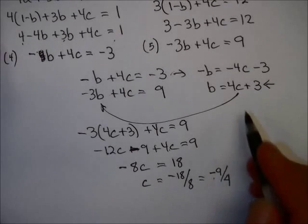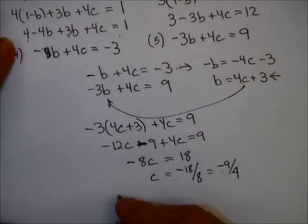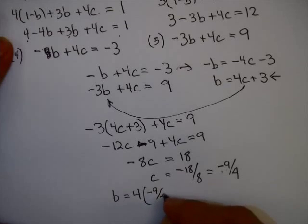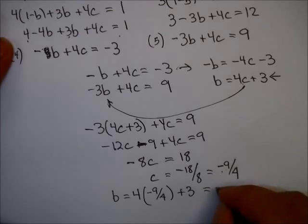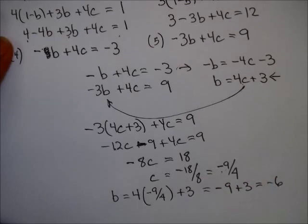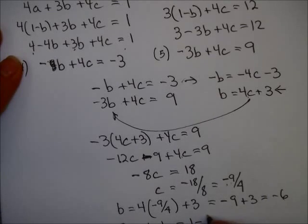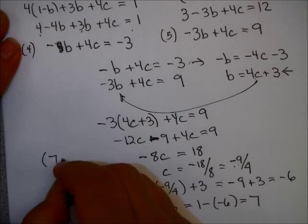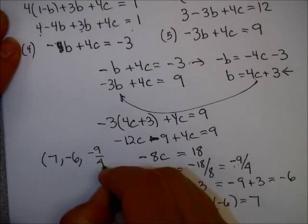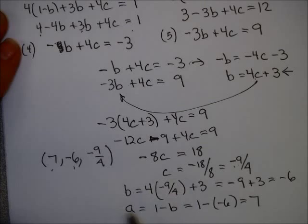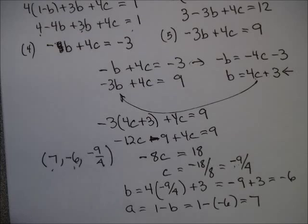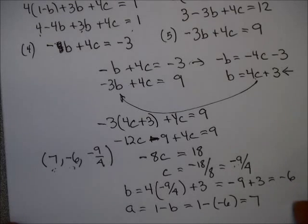For B, I can use back substitution, replacing C in that equation. So B equals 4 times C, which is minus 9 fourths, plus 3. That's B equals minus 9 plus 3, which is minus 6. And finally for A — we had the equation A equals 1 minus B — so A equals 1 minus negative 6, which gives me 7. So this system has the solution (7, minus 6, minus 9 quarters). It is traditional to put these in alphabetical order. Notice this is not an ordered pair but an ordered triple. There are three variables here.